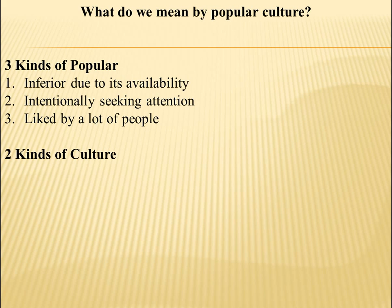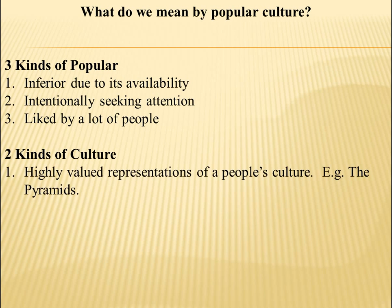We also have the term "culture." There are kind of two forms of culture we're thinking about here. The first is highly valued representation of a people's culture — the pyramids, the Statue of Liberty. When we talk about culture, we are sometimes talking about the actual artifacts or key representations. The flag that was put on the moon when American astronauts went into space — that is culture of a sort, a representation of the United States and its history and its power and influence.